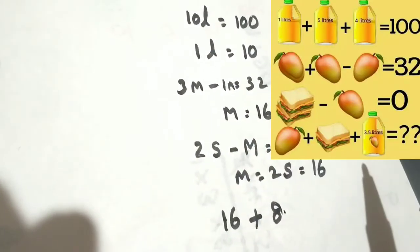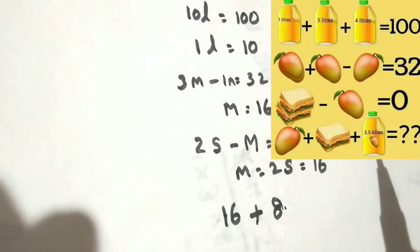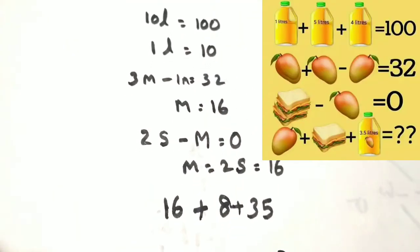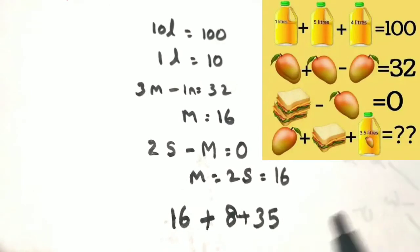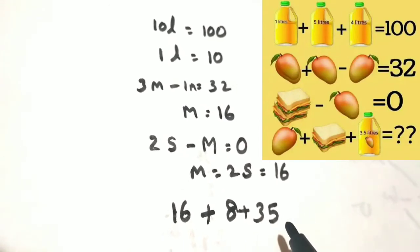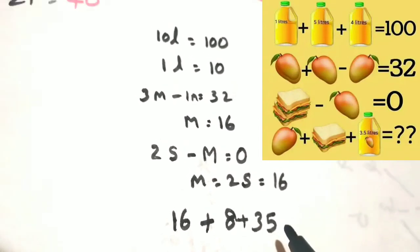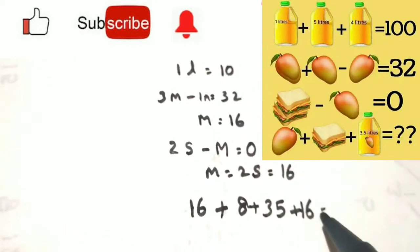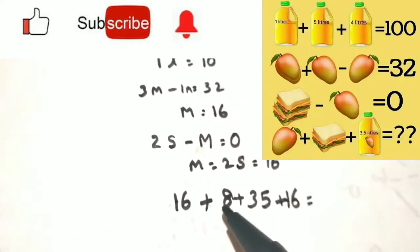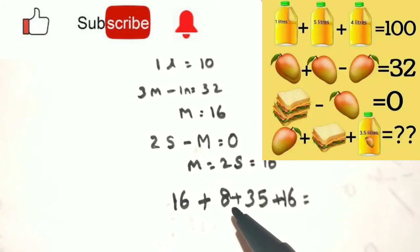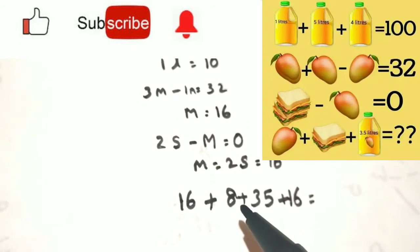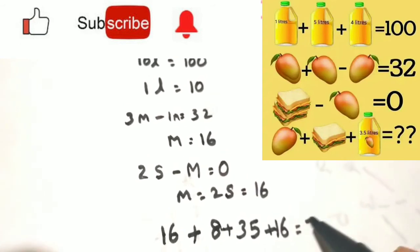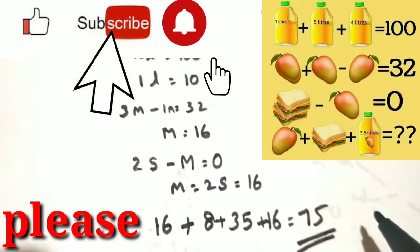And what you have to find: 3.5 liters of mango juice is there. So 3.5 into 10 — each liter is 10 — so 3.5 into 10 gives 35. And in that bottle one mango is also there, so the mango cost is 16. Now add all those: 16 plus 8 plus 16 is 32, plus 8 is 40, plus 35 — 75 is going to be the answer.